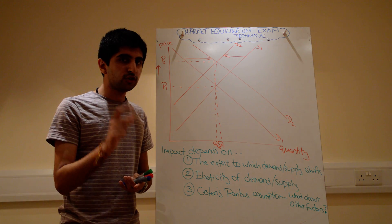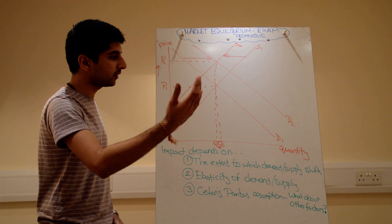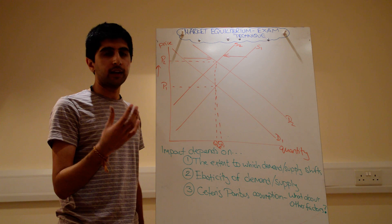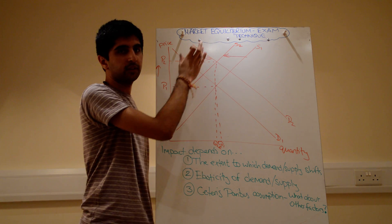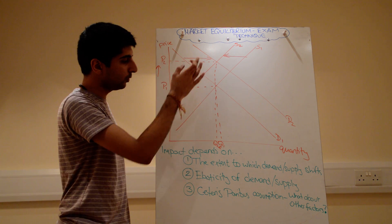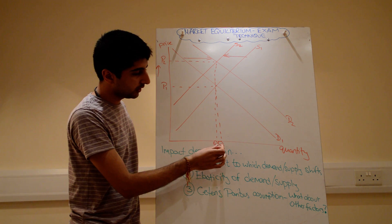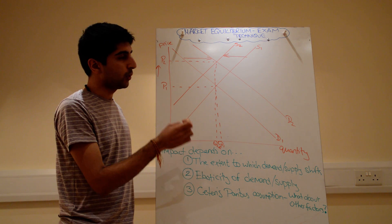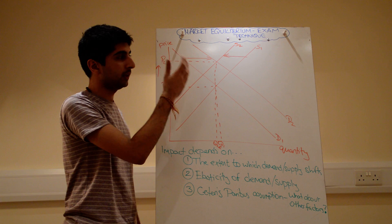Your analysis — your next chunk — should basically state what's happened on the diagram. So: as a result of an increase in advertising, demand has shifted to the right to D2. As a result of an increase in the cost of production, supply has shifted to the left from S1 to S2. The new equilibrium can be seen at price P2, Q2, where the price has increased from P1 to P2 and the quantity has reduced from Q1 to Q2.